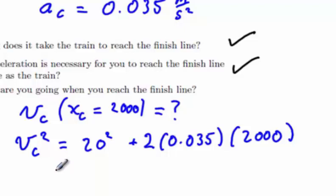Therefore, the velocity of the car, which is the answer to part C, is 23.2 meters per second.